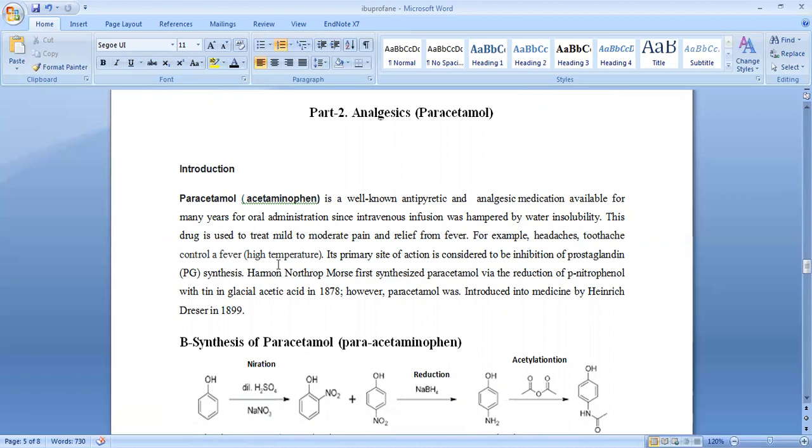This drug is used to treat mild to moderate pain and relief from fever, for example headache or to control fever and high temperature. Its primary site of action is considered to be inhibition of prostaglandin synthesis. The first synthesis of Paracetamol by reduction of paranitrophenol with tin in glacial acetic acid was in 1870. However, Paracetamol was introduced into medicine by Henrik Drazer in 1899.